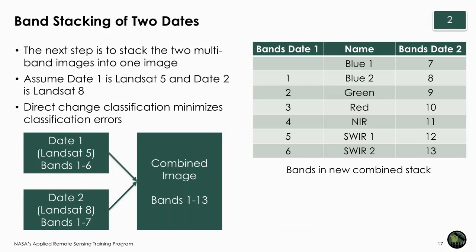The next step is to take the two cloud-masked images and generate a stacked, two-date, multiband image. In the hands-on exercise, this includes taking the Date 1 image — a Landsat 5 image with six bands — and the Date 2 image — a Landsat 8 image with seven bands — and stacking these into a combined 13-band image. Bands one through six are Landsat 5, and bands seven through thirteen are Landsat 8.